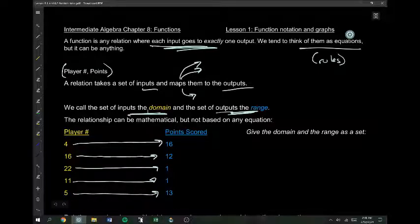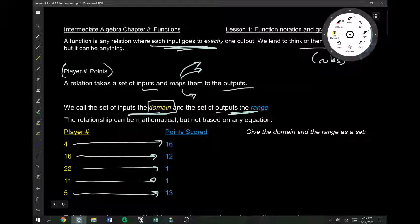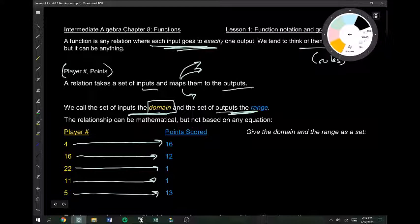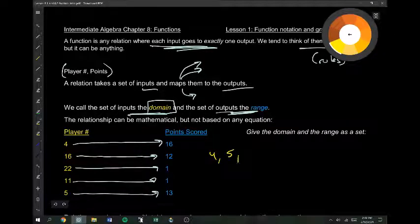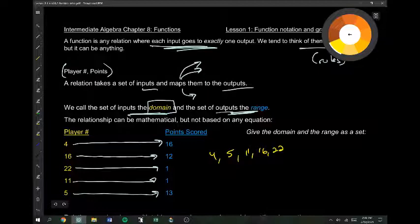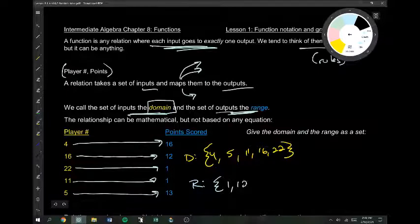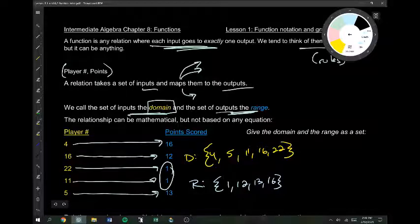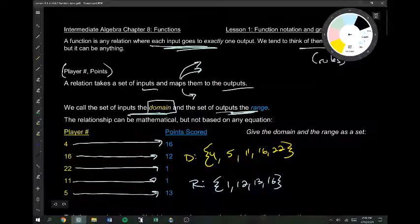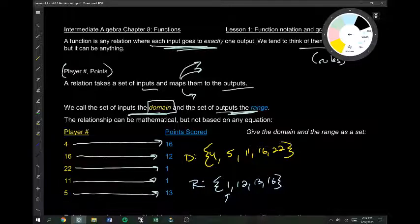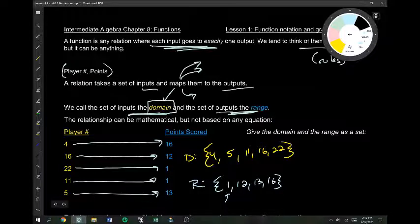If I wanted to list the domain of this function, that would be a list of all the possible inputs. And all the possible inputs are pretty straightforward: 4, 5, 11, 16, 22. We tend to give our domains and our ranges in numerical order, so keep doing that. The range is a set of all the outputs, which is 1, 12, 13, 16. You'll notice the number 1 here was repeated twice. There were two players that only scored one point. I don't list it twice, though. I just want to list what appeared. The number 1 appeared, I'm not listing how many times it appeared, just the fact that it appeared. So, the domain is all your inputs, the range is all your outputs.